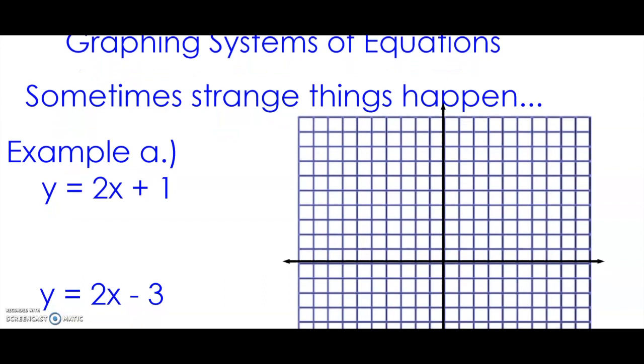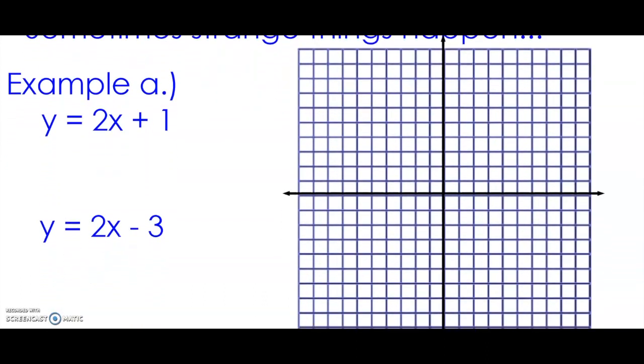Let's look at what strange things happen here. So example a: the first equation y = 2x + 1. The slope is 2, the number next to x, which is 2 over 1, and the y-intercept is at (0, 1).